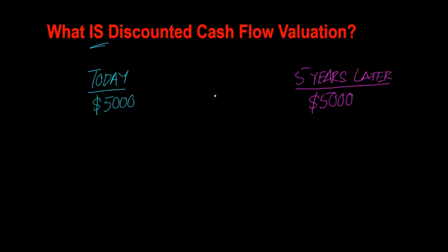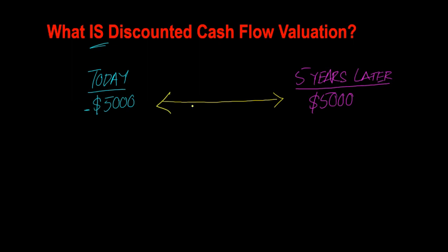If I ask you how you feel about this proposition — your friend asking you for $5,000, with a negative sign to depict that this $5,000 will go out of your pocket today, and then you receive it five years later, guaranteed — you might say you don't feel so good about this. Why? Because once you dish out $5,000, this money is gone, and you won't see it for another five years. You are losing out on everything else you possibly could have done with that $5,000.